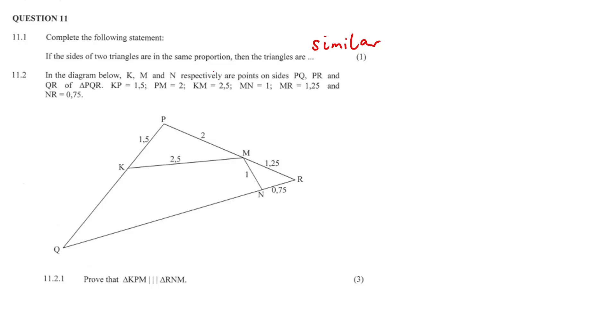So in the diagram below, K, M, and N respectively are points on sides PQ, PR, and QR of triangle PQR. So we've got K, P, M, K, M, N, M, R, and we've got N, R as well. We've got this triangle here.